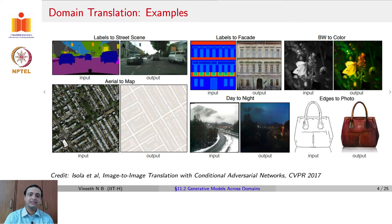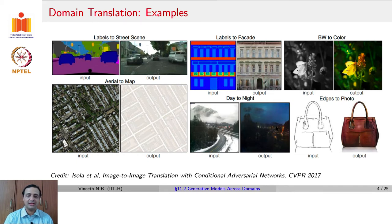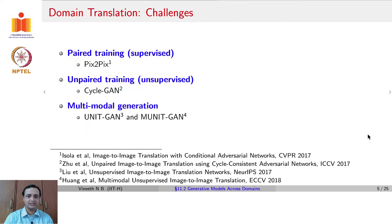Here are some examples of how domain translation can be used: going from semantic segmentation labels to a street scene, labels to a facade, black and white to color, day to night — which could be very useful for autonomous navigation or self-driving datasets — going from an aerial view to a Google Maps kind of output, or going from a sketch to a photo. All of these are examples of domain translation.